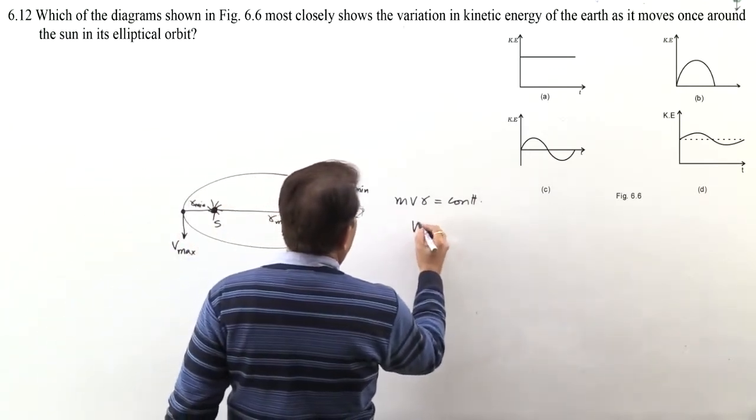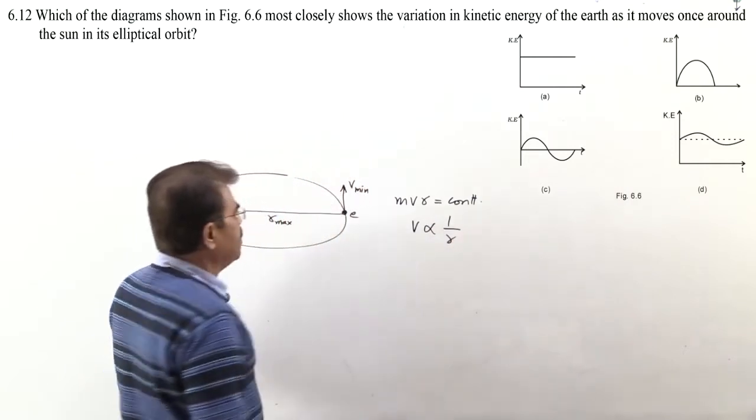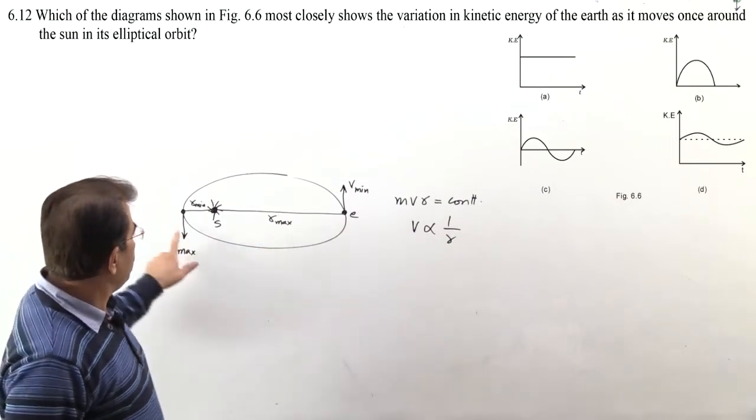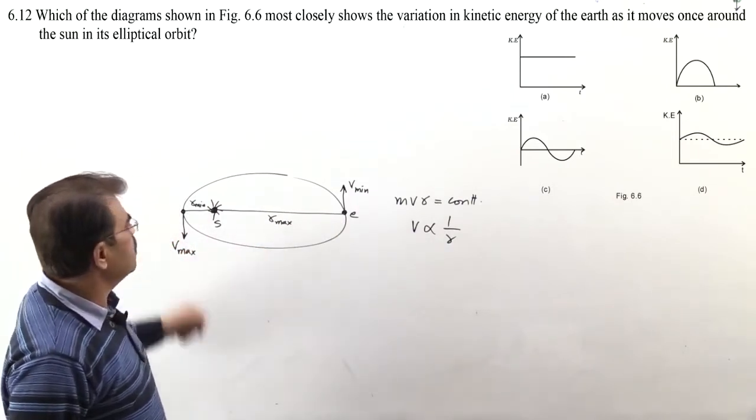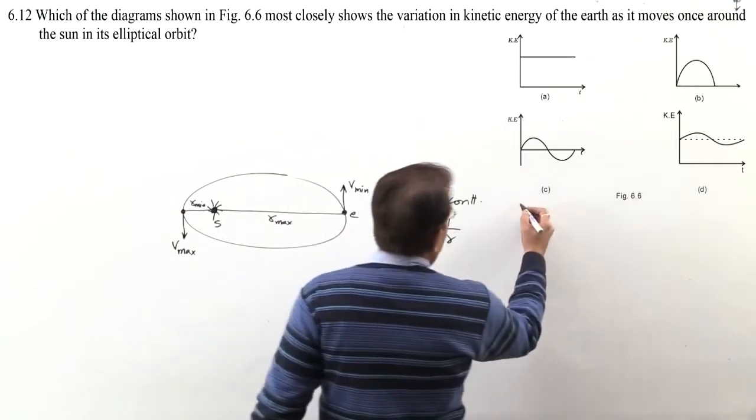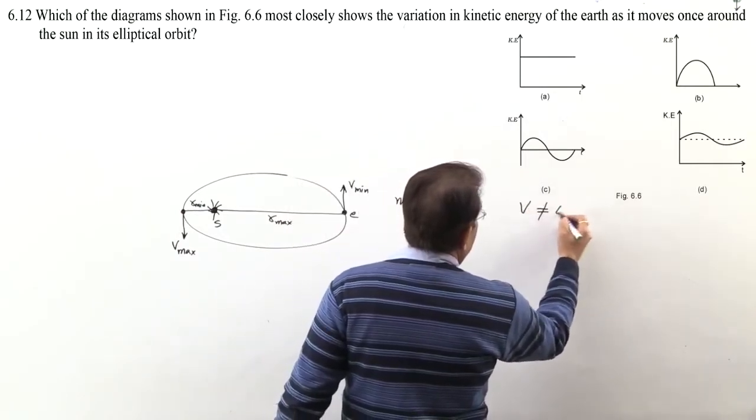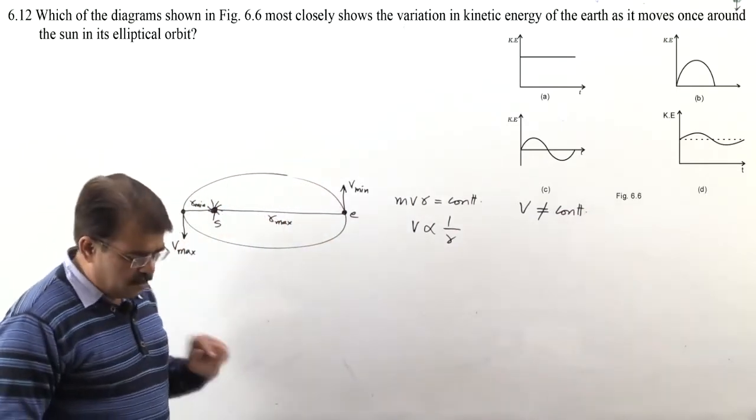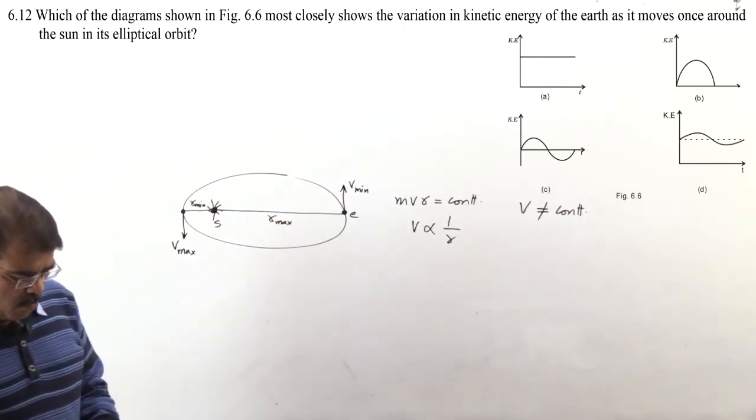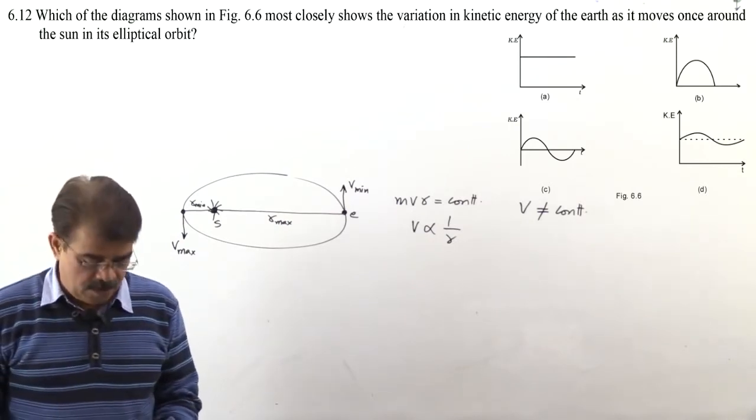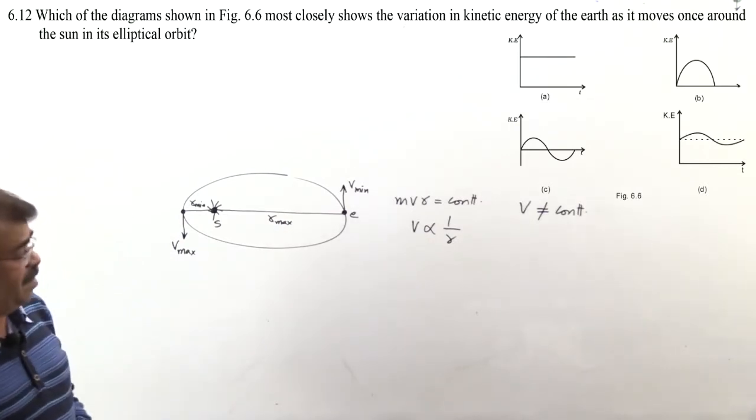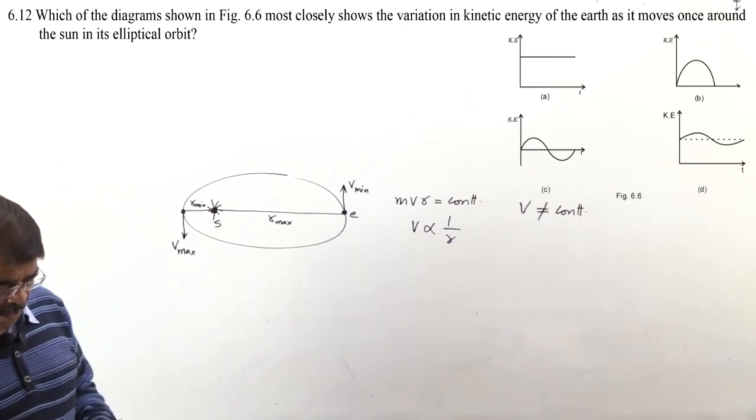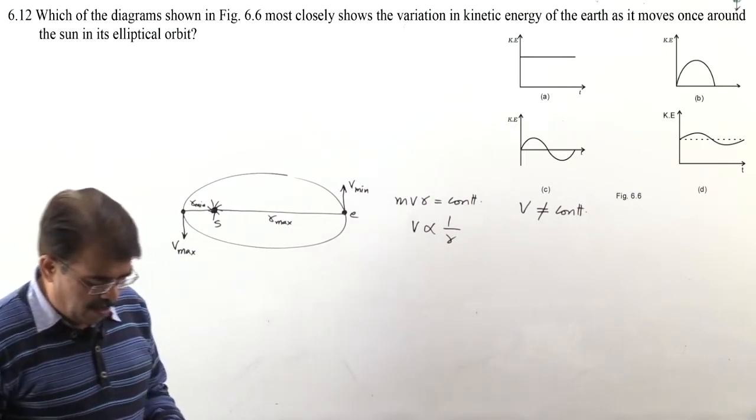Mass is constant, v and r are inversely proportional. When r is maximum, then Earth's velocity will be minimum. And when r is minimum, there velocity will be maximum. We had to understand this: velocity is not constant. Velocity is not constant for Earth when it revolves around sun.